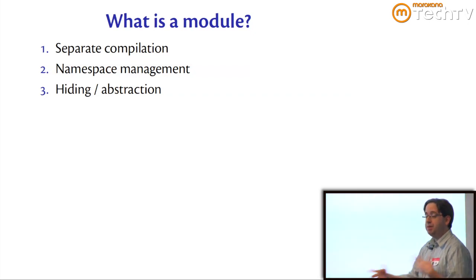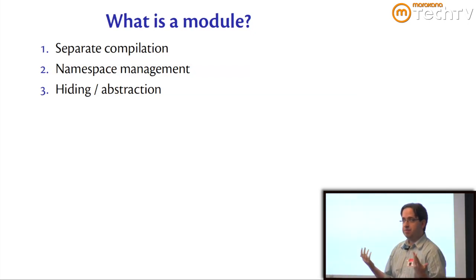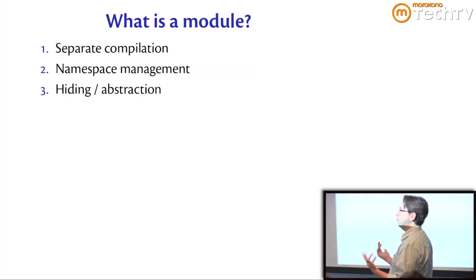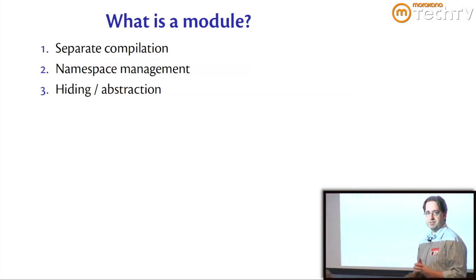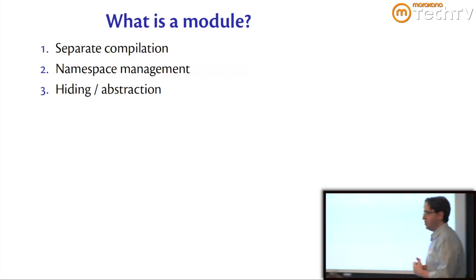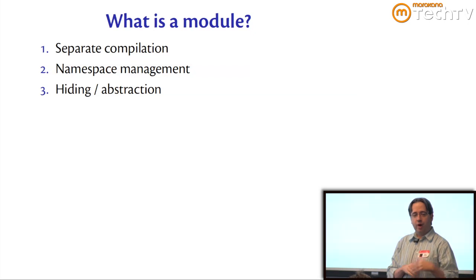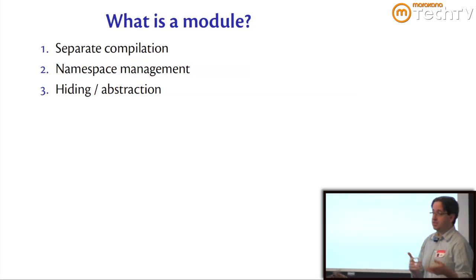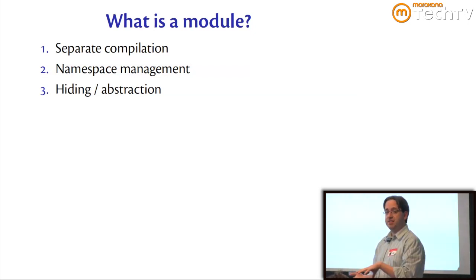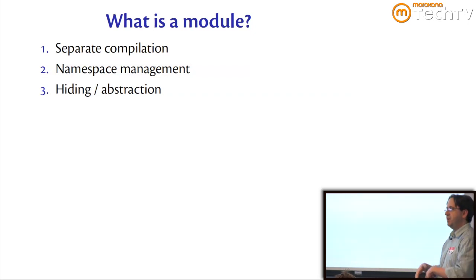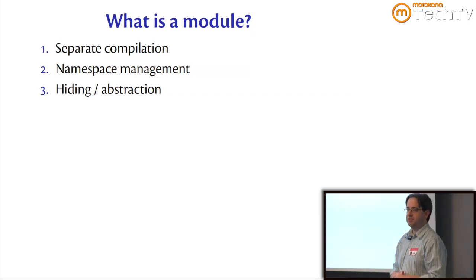Second, it's about namespace management, which is a pretty simple idea but extremely important. And third, maybe the richest area, is that it's about abstraction. One element of abstraction is just hiding, concealing things, but also abstraction means parameterization. So we'll look at both kinds of abstraction.